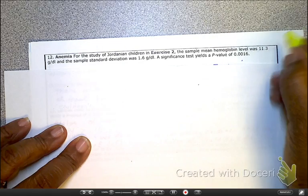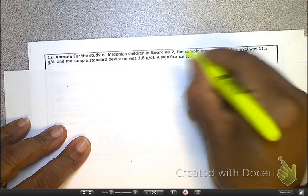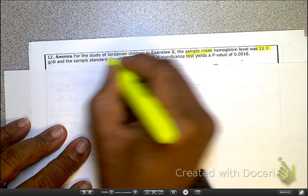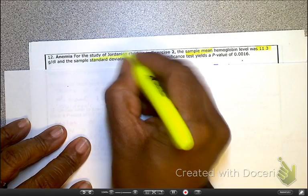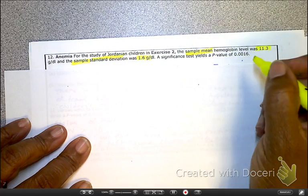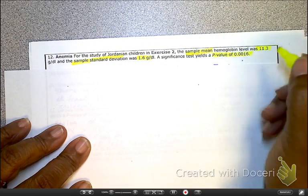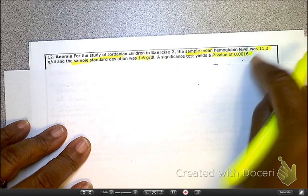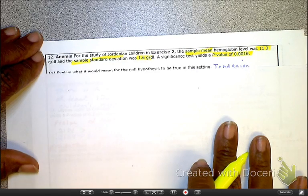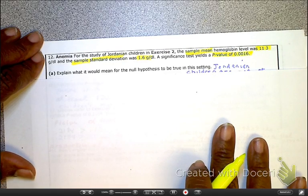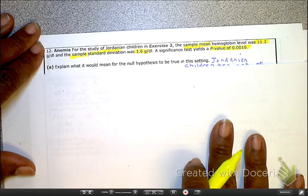And we have a p-value of 0.0016. So here we want to explain what this means in this setting.